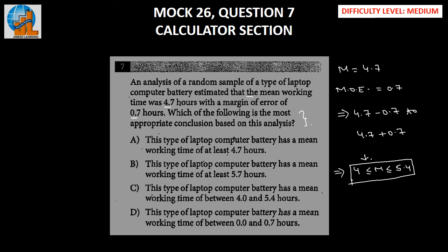Option A states this type of laptop computer battery has a mean working time of at least 4.7 hours. But as we have found in our analysis here, the minimum value that we are getting is 4 and not 4.7, and hence we can eliminate option A here. Let's go to option B.